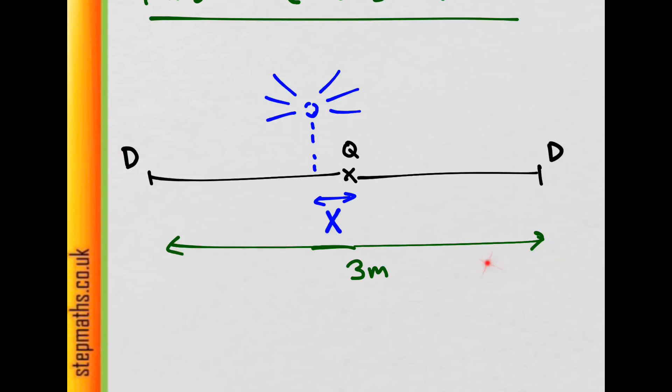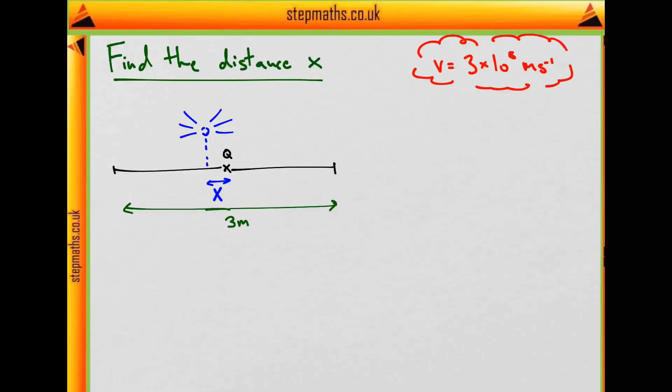The distance between the detectors is 3 meters. We know the time difference between the signals at each side and also knowing the speed, which is the speed of light, and that should help us find the distance x.